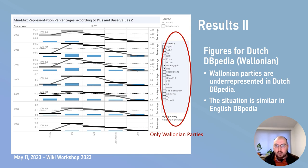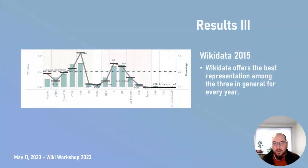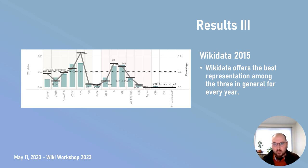Finally, among the three sources, Wikidata provides the best representation in terms of percentages of politicians that can be found. Using accurate information can help the development of tools like Diversity Searcher, which has social and normative goals. However, misrepresentation in data and tools can further increase the visibility of certain voices over others, despite the best intentions of developers and designers.